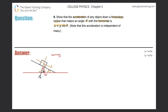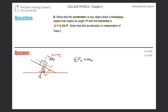The block will accelerate down the hill with some acceleration a. Since there's a force in the x-direction and the block slides down with no friction, applying Newton's second law: the sum of forces in the x-direction equals m·a_x. The only force in the x-direction is F_x, so F_x = m·a_x.